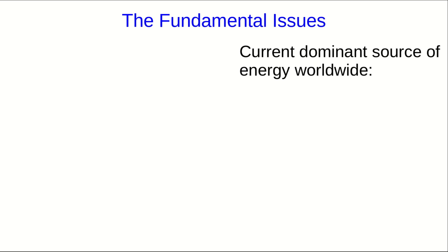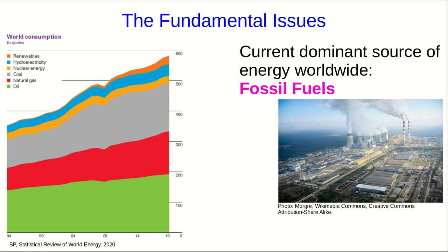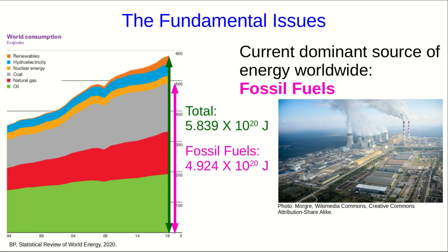With the remainder of this video, I'm going to attempt — in about five minutes — to summarize all the main fundamental issues to do with human energy use. This is a ridiculous goal; there's no way I can really pack a good summary into five minutes, but we'll see how I do. Right now, the dominant source of energy worldwide is, you will be unsurprised to hear, fossil fuels. Of the roughly 584 exajoules of energy that humanity used in 2019, about 492 exajoules was from fossil fuel sources — that's about 84%. That is what I mean when I say dominant.